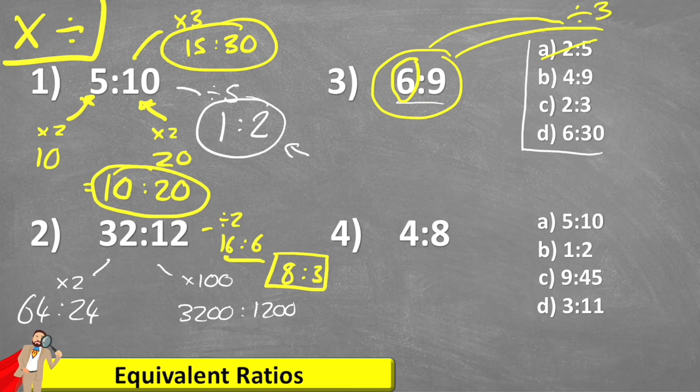B is 4 to 9. Well, we can see straight away, it can't be equivalent because we have a nine here and a nine here. But then our first numbers are different, not equivalent.